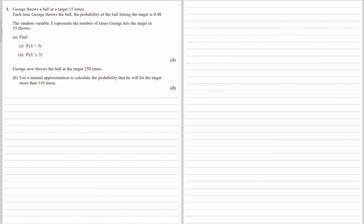George throws a ball at a target 15 times. Each time George throws the ball, the probability of the ball landing on the target is 0.48. The random variable X represents the number of times George hits the target in 15 throws. We have to find the probability that X is 3 for the first part.